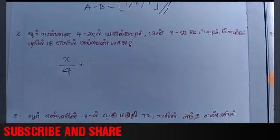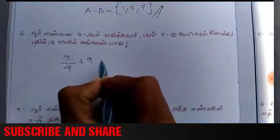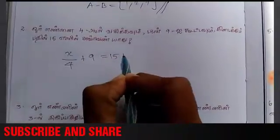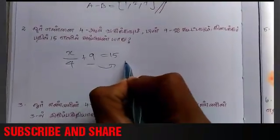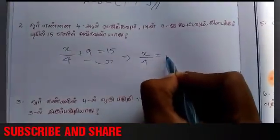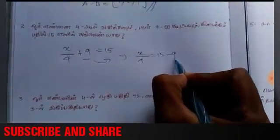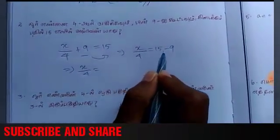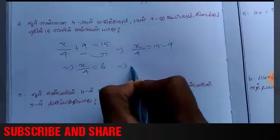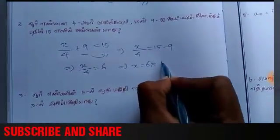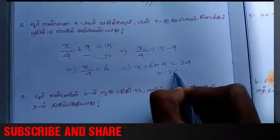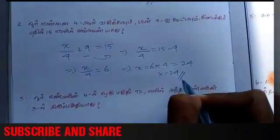1-9, 1-9, 1-9, 1-9, 15. x4. 9. x4. 15. 9. x is equal to 6 into 4, so x value is 24. That's the answer.